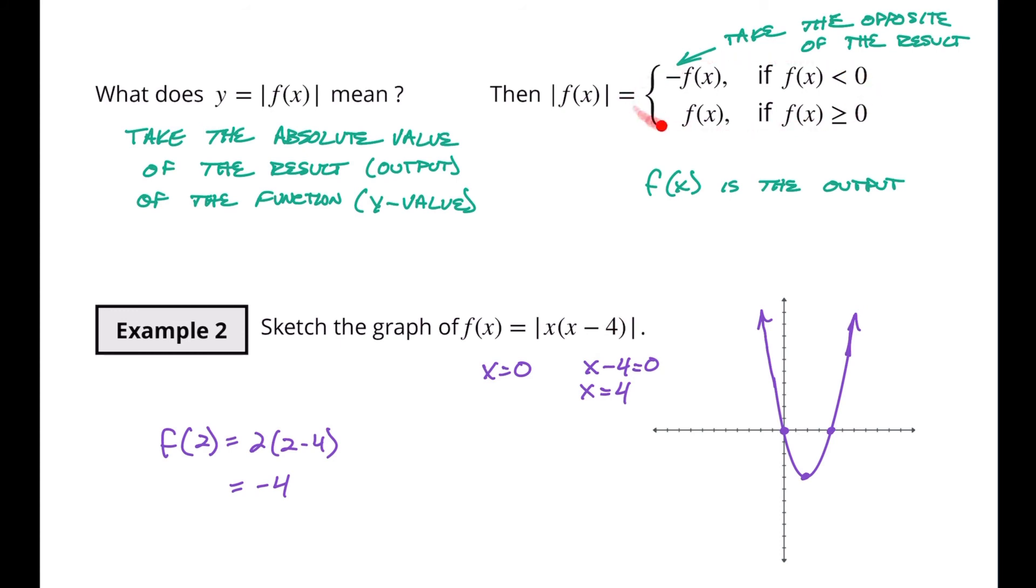But now let's take a look at what we're saying up here. If the values are greater than zero then leave it the same. So that's going to be these parts right here that's greater than zero. If this is less than zero, if the output is less than zero, take the opposite value of that.